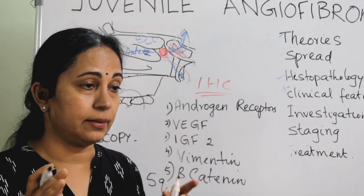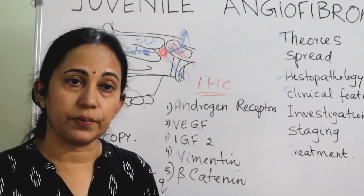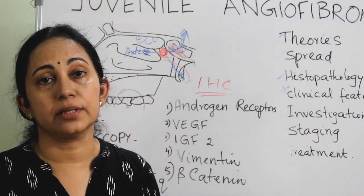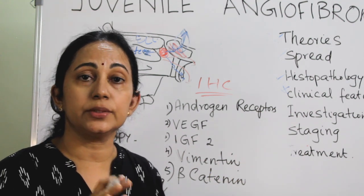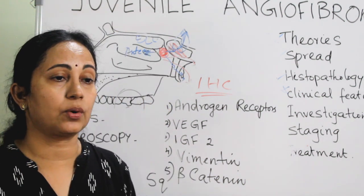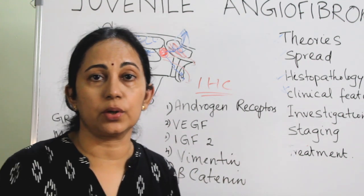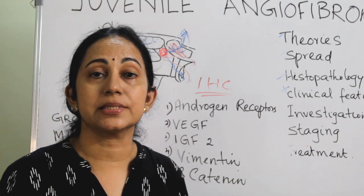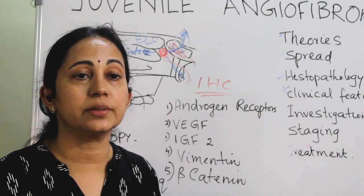To summarize histopathology: grossly, JNA is a well-defined lobulated mass covered with nasopharyngeal mucosa, grayish to reddish in color, with a spongy texture. Microscopically, it shows two components: a vascular component (endothelium) and a fibrous stroma. The endothelium and vascular component lack elastin fibers and the muscle layer, which is why vessels do not contract and cause profuse bleeding.